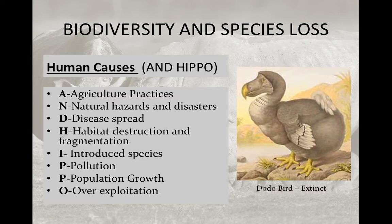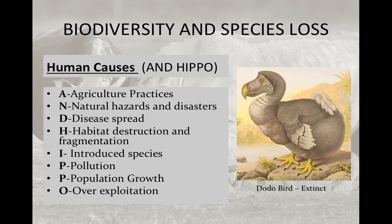Human causes form the acronym AND HIPPO, which may help you remember them for the quiz. AND HIPPO stands for: Agriculture practices; Natural hazards and disasters exacerbated by humans, like dams breaking; Disease spread; Habitat destruction and fragmentation — not just destroying habitat but interrupting it with a highway so that populations on each side can no longer interbreed and may undergo speciation or die off; Introduced species — non-native species that outcompete native species for food, water, or sunlight; Pollution from human populations; and human Population growth, which leads to Over-exploitation — the more humans, the more resources consumed and natural environments destroyed.